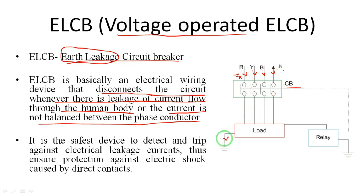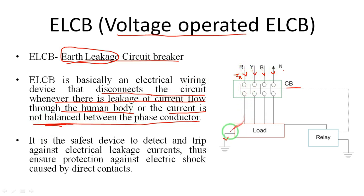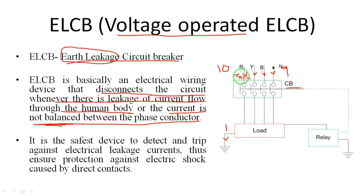If any earth leakage current occurs, then the incoming current is not equal to the outgoing current — that is an imbalance. For example, if the incoming current is 10 amperes and the leakage current is 1 ampere, then the return current will be only 9 amperes. Because of this leakage, that leakage current passes through the relay to the ground via the parallel connection.